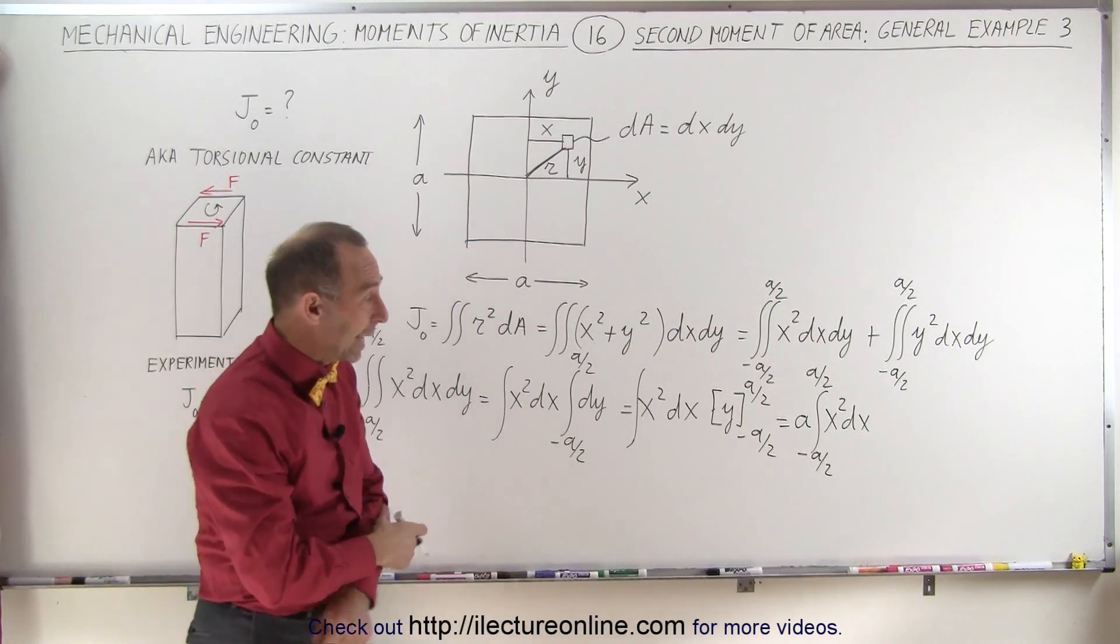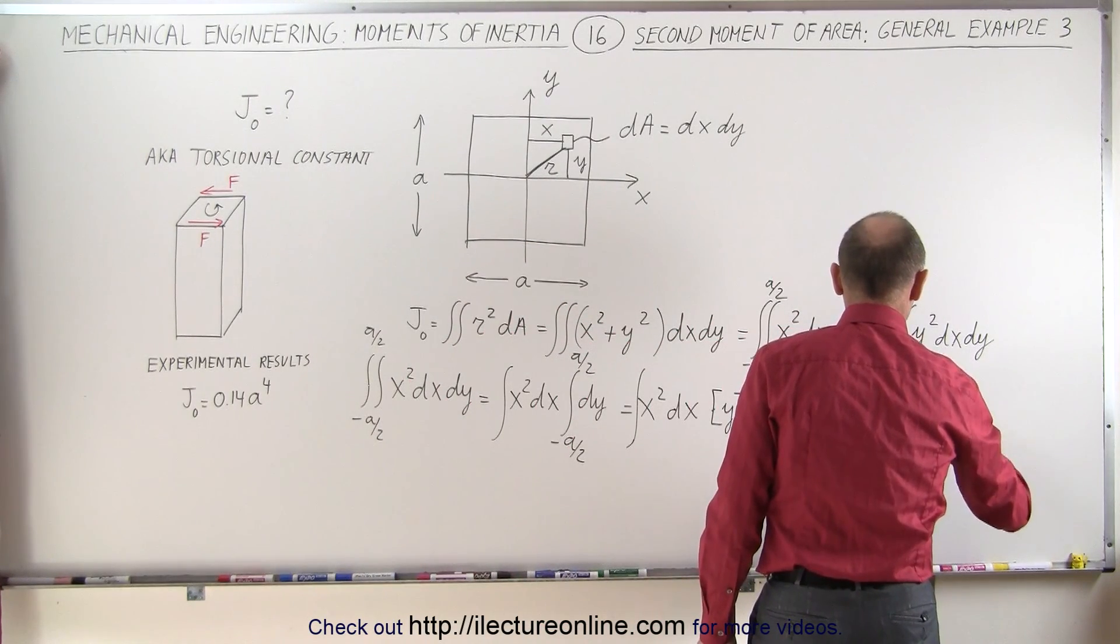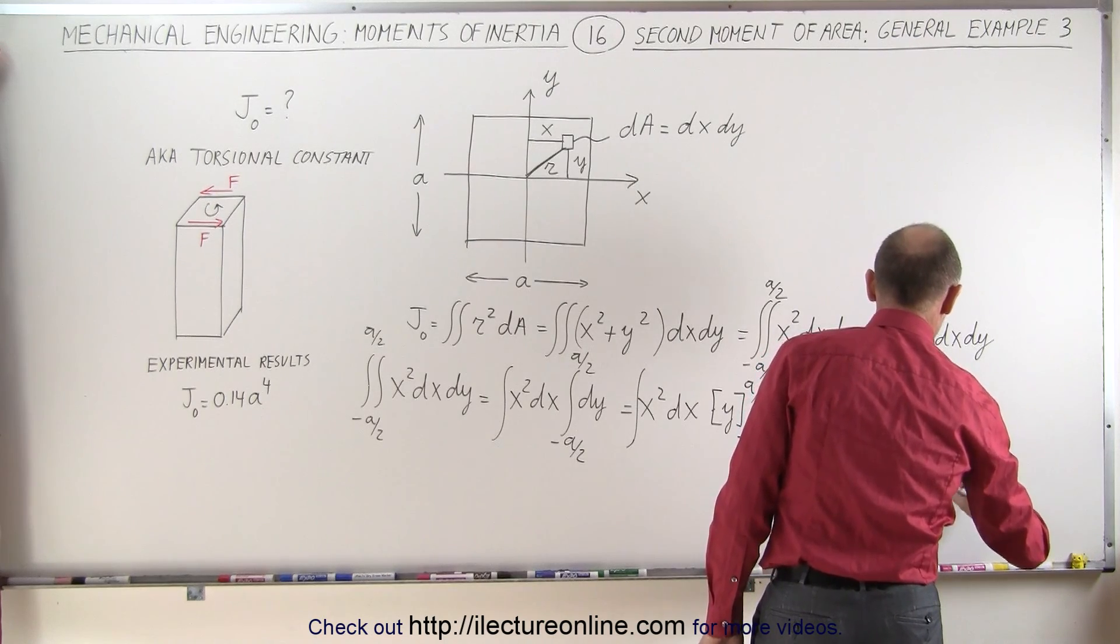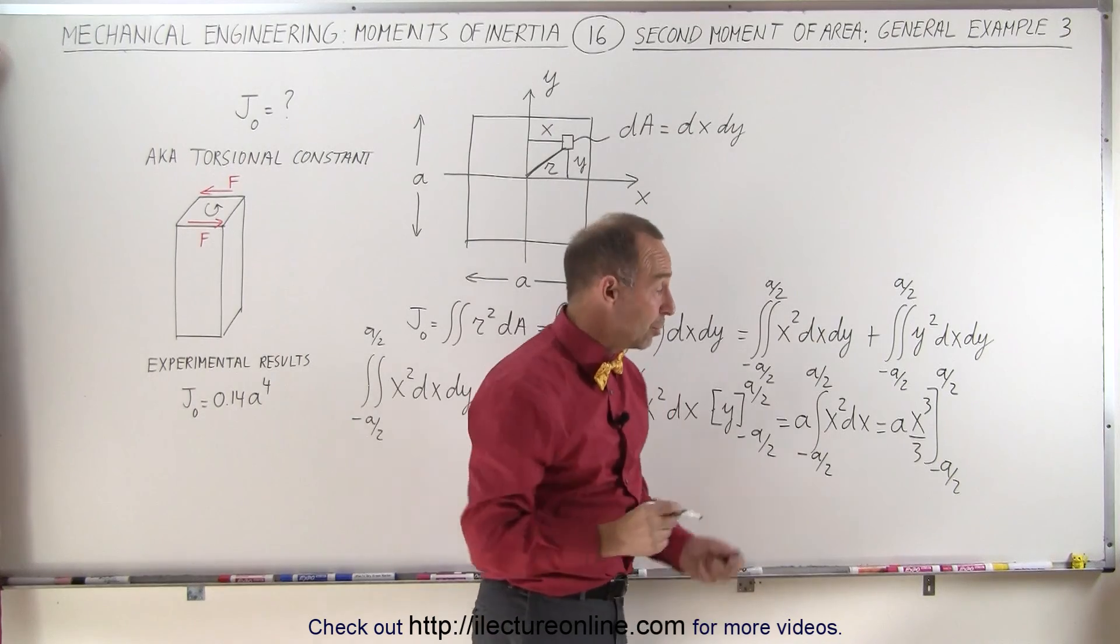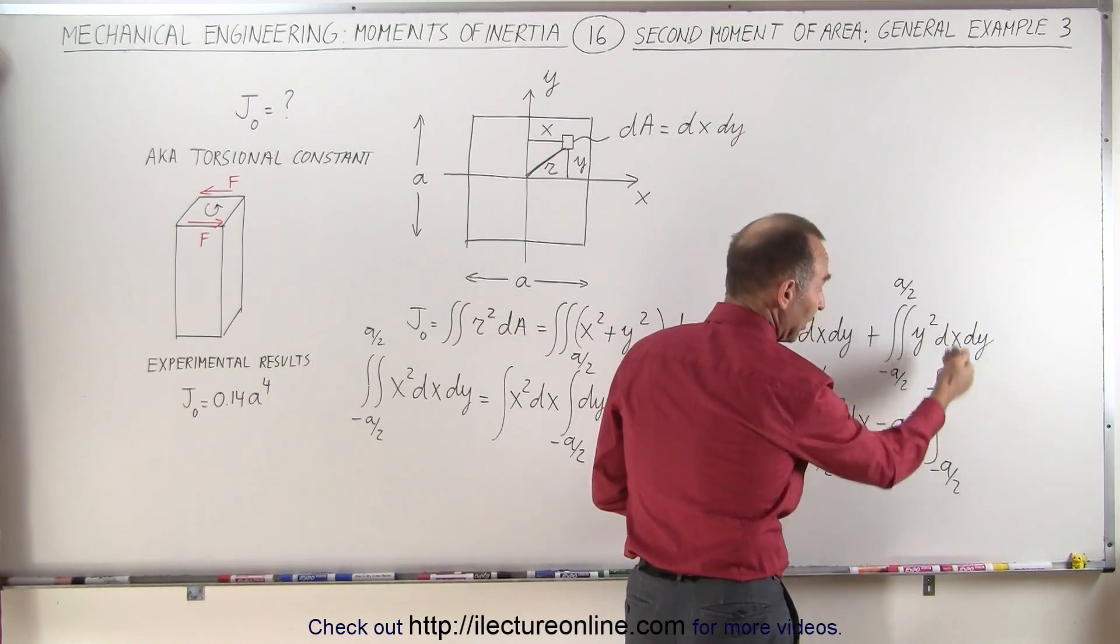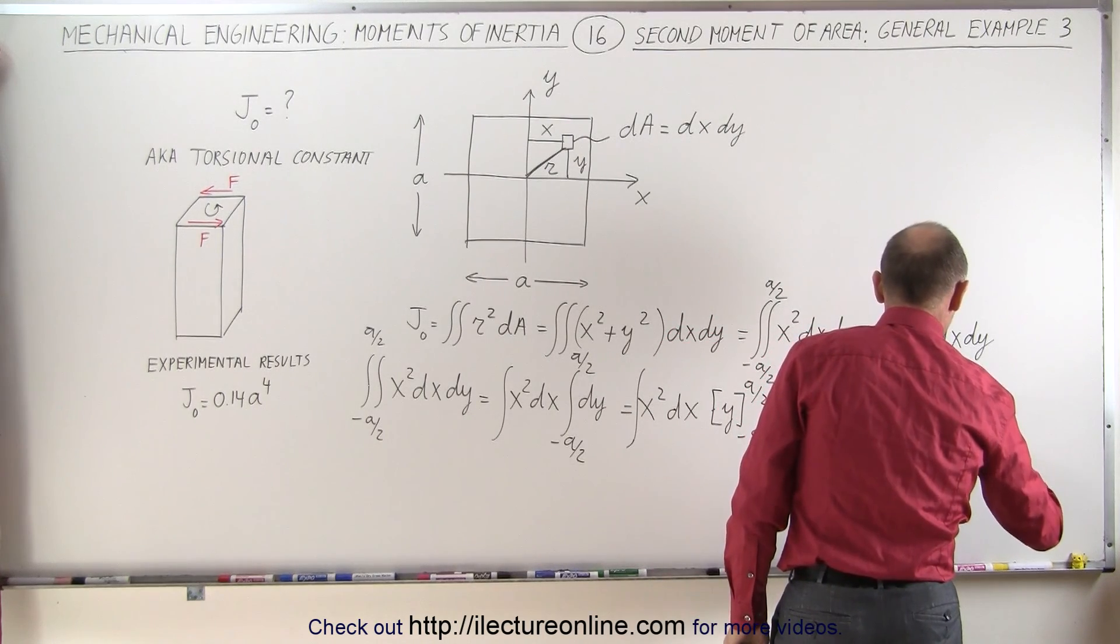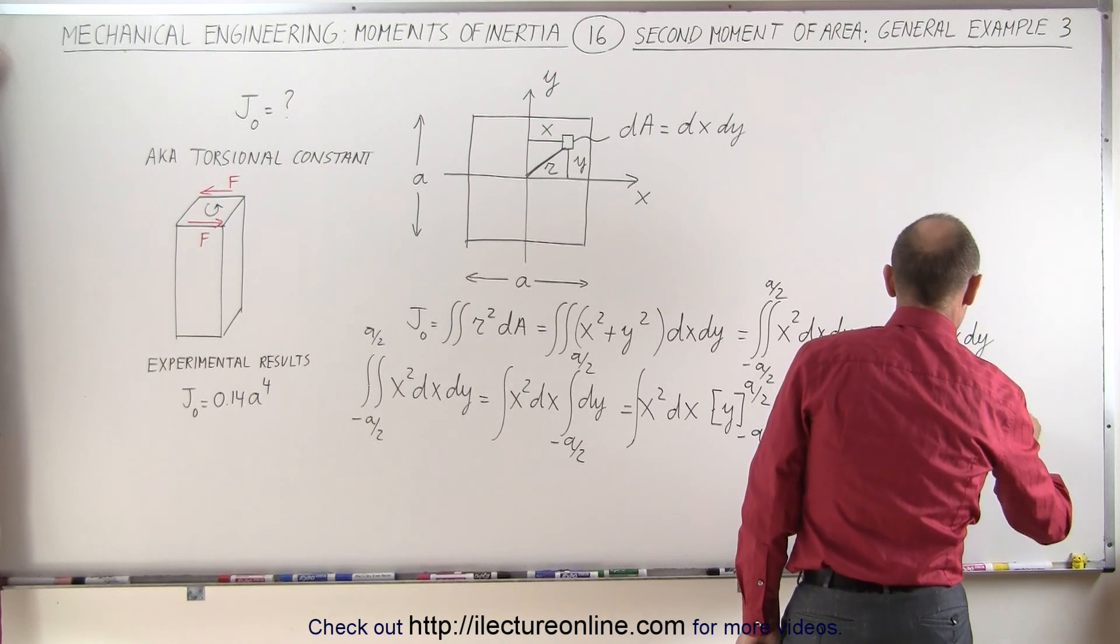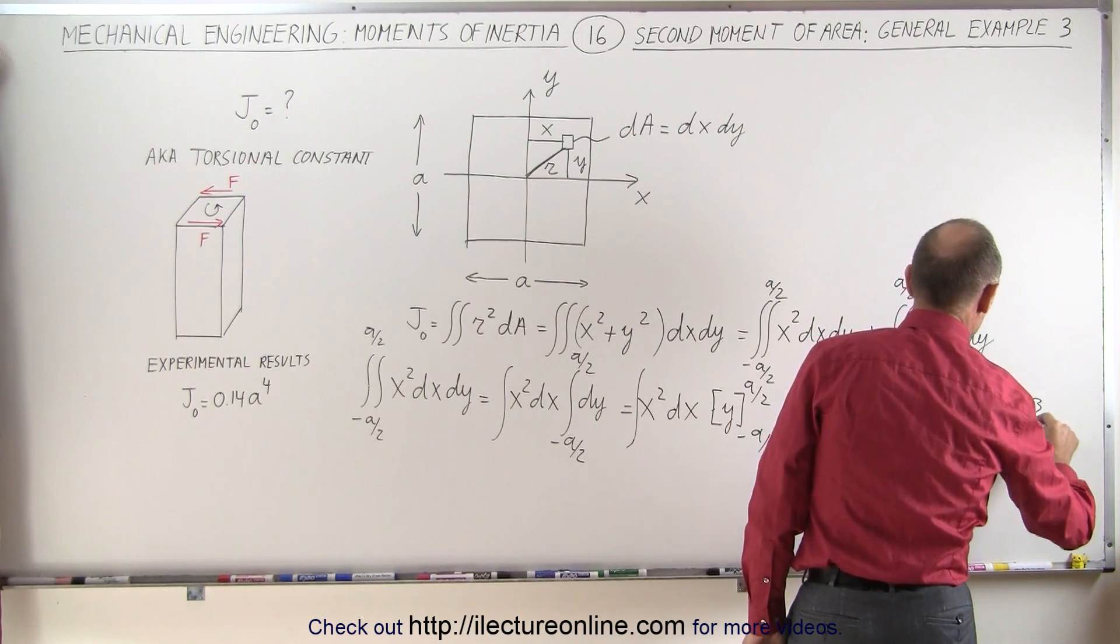Next, we integrate that. That would be x cubed over 3. So this gives us a x cubed over 3 with the limits of minus a over 2 to positive a over 2. Again, when you plug in the lower limit and you subtract, you're basically adding that. So we end up with a divided by 3 times, that would be a cubed over 8 plus a cubed over 8.